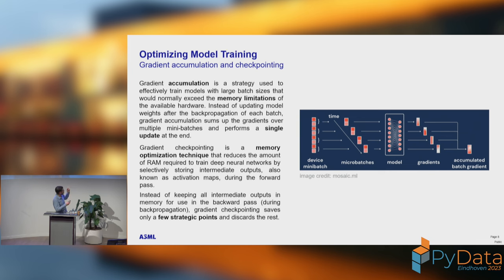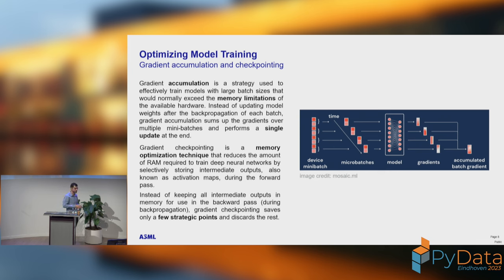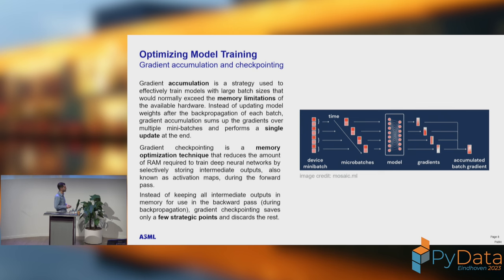Another technique called gradient checkpointing is a lifesaver. We don't have to store everything in memory at every single moment in time — we only save some strategic points. For gradients, you can look at activation maps during the forward pass: you just store whatever you need rather than everything. Gradient checkpointing deserves a separate talk, but this one saves memory and speeds up your workload. You can use it as a turnkey solution in PyTorch or PyTorch Lightning.